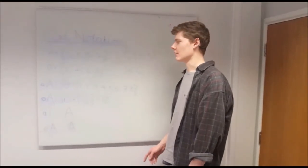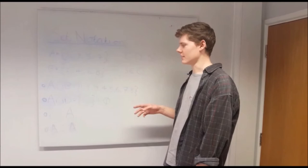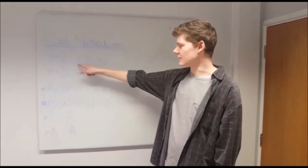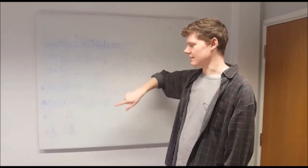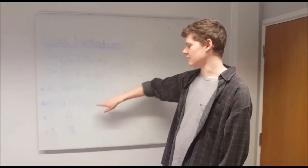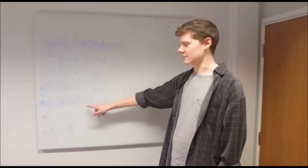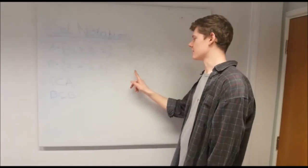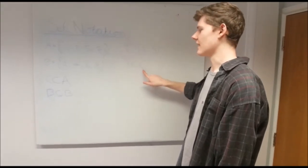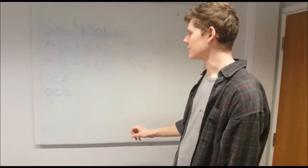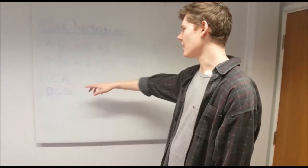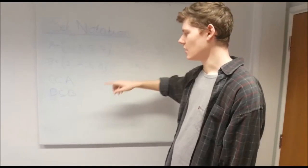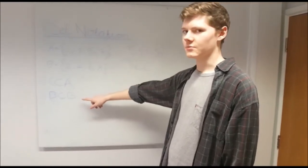A set is a group of numbers called elements. Elements cannot be repeated in the set. The union of two sets is the collective of the elements in each set. The intersection of two sets is the collective of terms that they share, which in this case is 0, also written as the empty set. We use this symbol here to say that this number is an element of this set. When talking about subsets, we say that C is a proper subset of A if the elements of C are in A and C is not equal to A. B is an improper subset of B because B is equal to B.